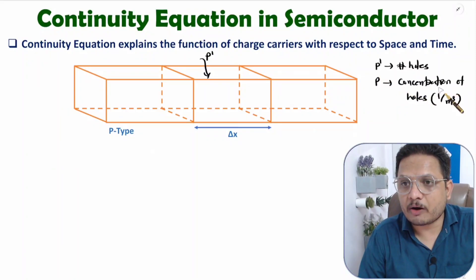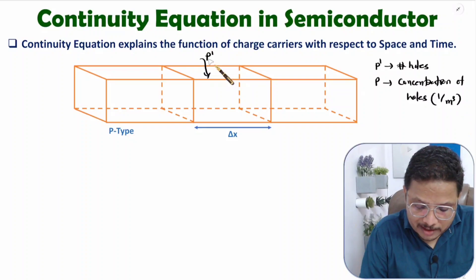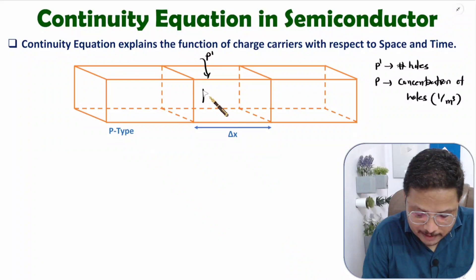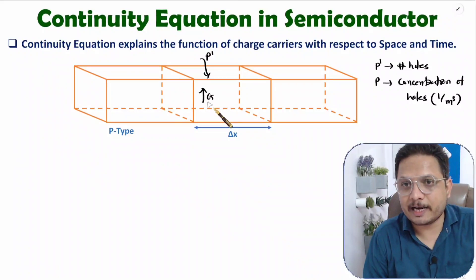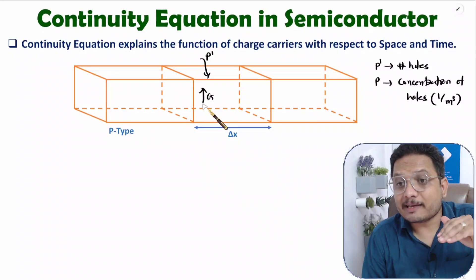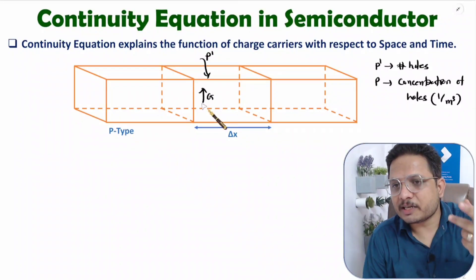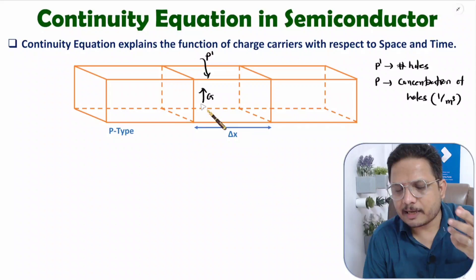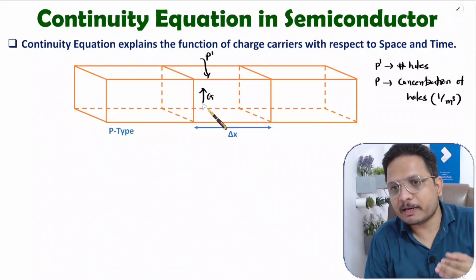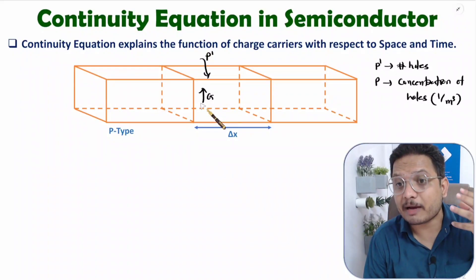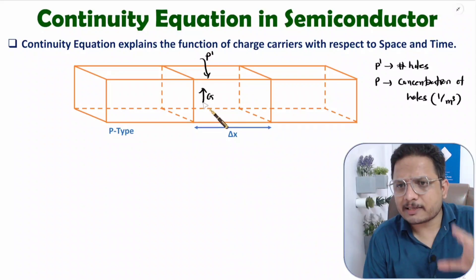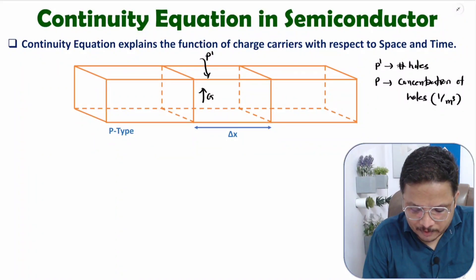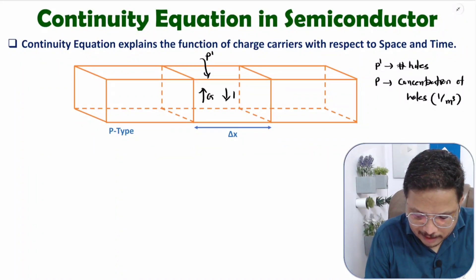To understand how many holes are there, you need to understand how generation takes place. Generation explains how many charge carriers are generated. Generation can happen by multiple ways — it can be done by light, by electric field, or by external supply. Let us consider generation rate as g and recombination rate as r.